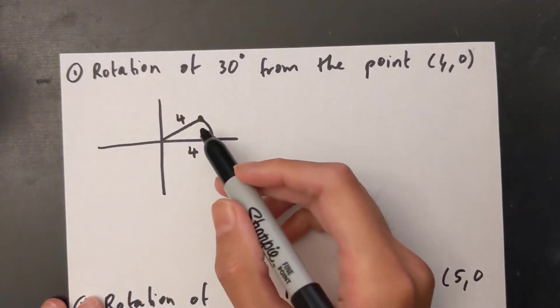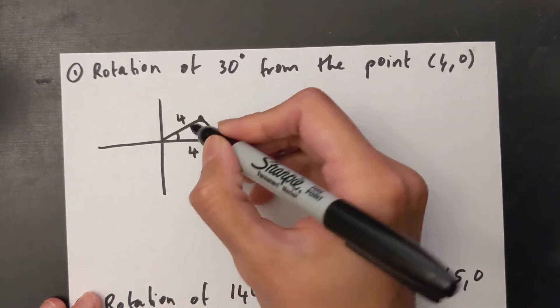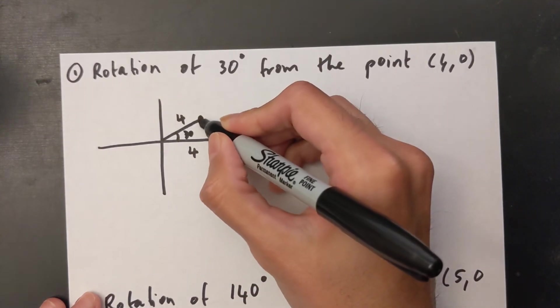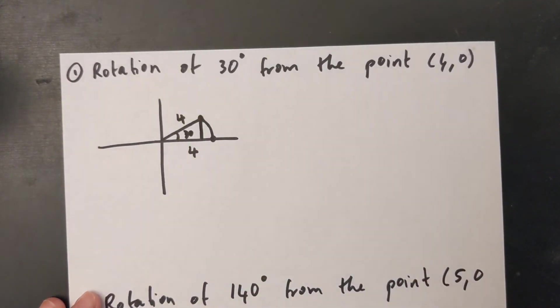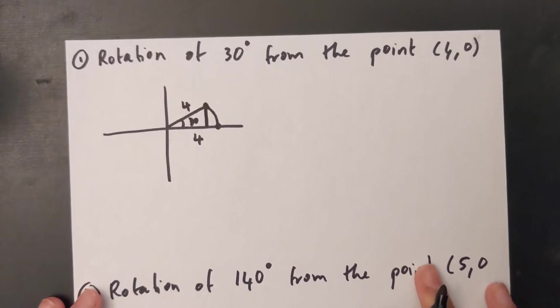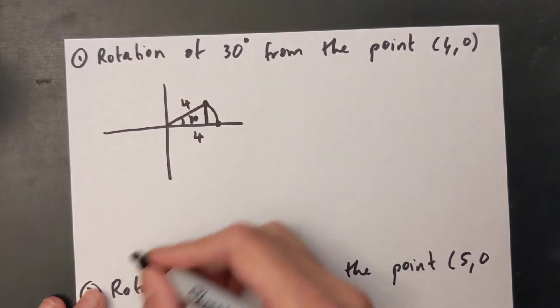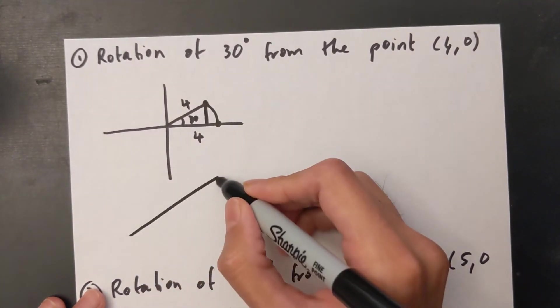Now what I'm going to do from this is I also know that this is 30 degrees. I'm going to draw a straight line down to make this a right angle. I'm going to expand this triangle out so that you can see it a bit more clearly down here.